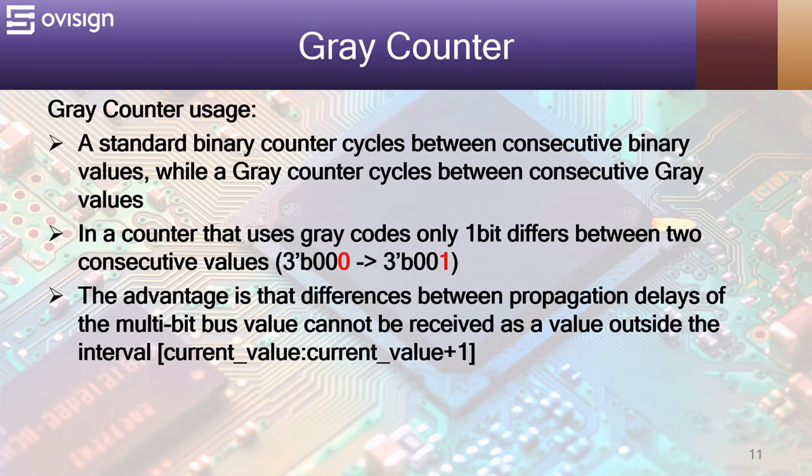First let's see what the gray counter is. A standard binary counter cycles between consecutive binary values while a gray counter cycles between consecutive gray values. In a counter that uses gray codes only one bit differs between two consecutive values, like the transition from 000 to 001.